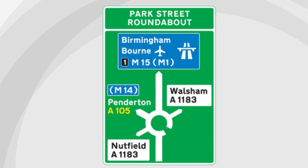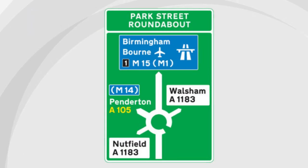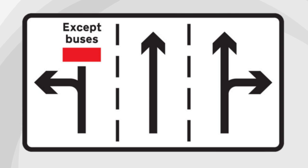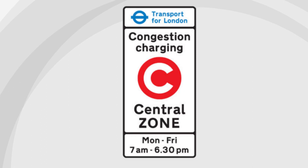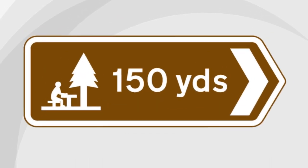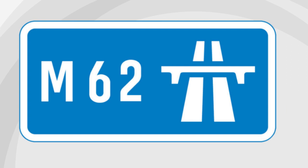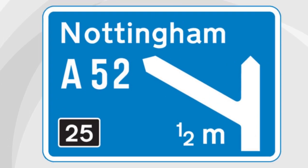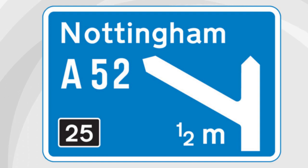Let us move on to the rectangular signs which provide the motorist with information. Primary directions at a roundabout. Local directions at crossroads. Lane information on approach to a junction. Congestion charge information. Information sign at roadworks. Brown rectangular signs provide information for tourists. Start of motorway. Information sign on a motorway. Information sign on approach to a junction at a motorway — this particular sign provides information that the next junction, which is junction 25, is half a mile away, and that the junction leads on to the A52 towards Nottingham.